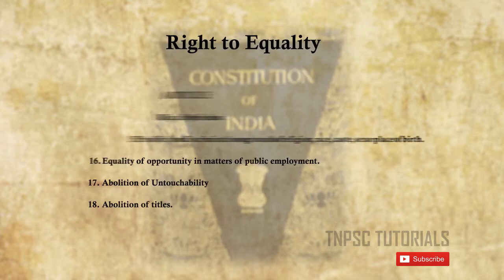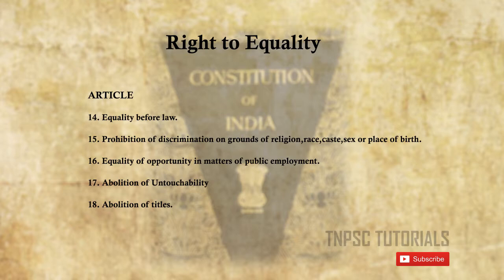The first one is Right to Equality. It covers Articles 14 to 18. Article 14 explains equality before law and equal protection of law. Article 15 deals with prohibition of discrimination on grounds of religion, race, caste, sex, or place of birth. Article 16 deals with equality of opportunity in matters of public employment. Article 17 covers abolition of untouchability and prohibition of its practice. Article 18 covers abolition of titles except military and academic.